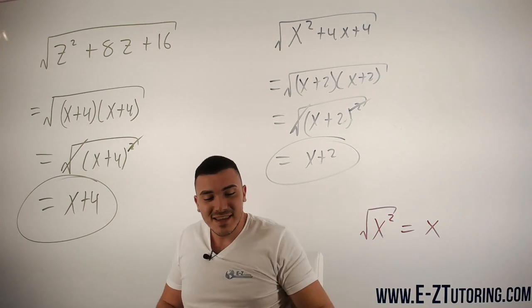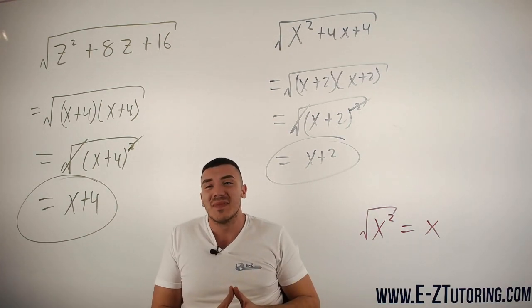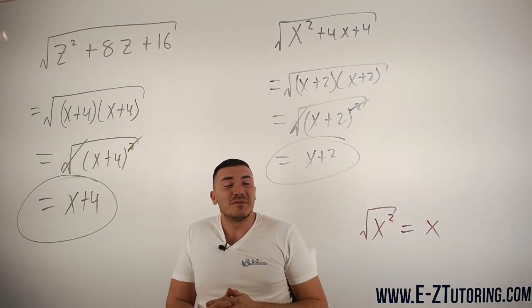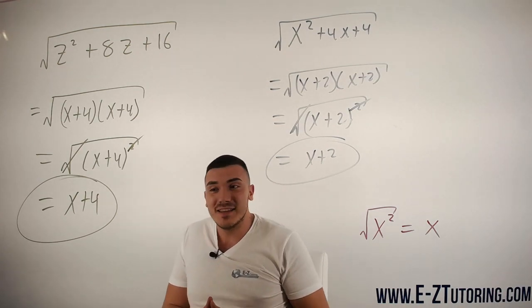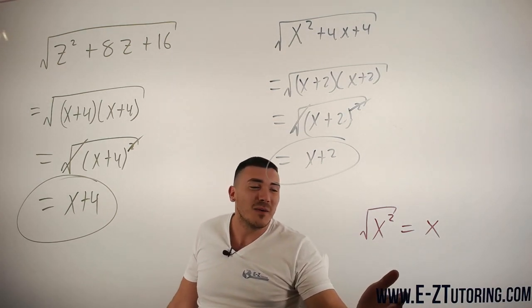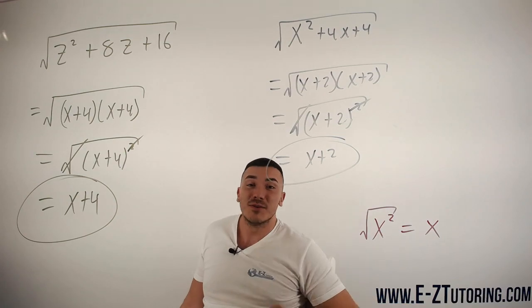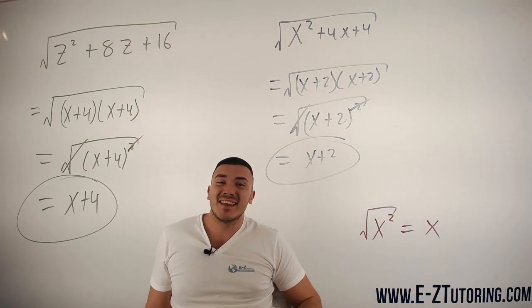So that is how you can take the square root of trinomials. Hope you guys understand this better. If you guys ever want ACT or SAT help, be sure to visit my website www.e-z-tutoring.com. Thank you guys and have a good day.